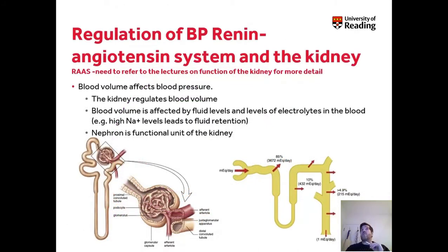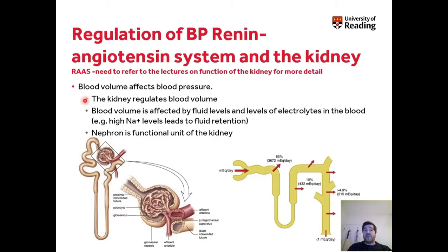The other major way of regulating blood pressure is via the renin-angiotensin-aldosterone system, which is regulated largely by the kidney. You'll need to refer to lectures on kidney function for more detail, but the kidney is very much associated with the cardiovascular system. Blood volume can affect blood pressure, and the kidney regulates blood volume — the amount of water and salts in the body. High sodium retention, for example, leads to fluid retention.